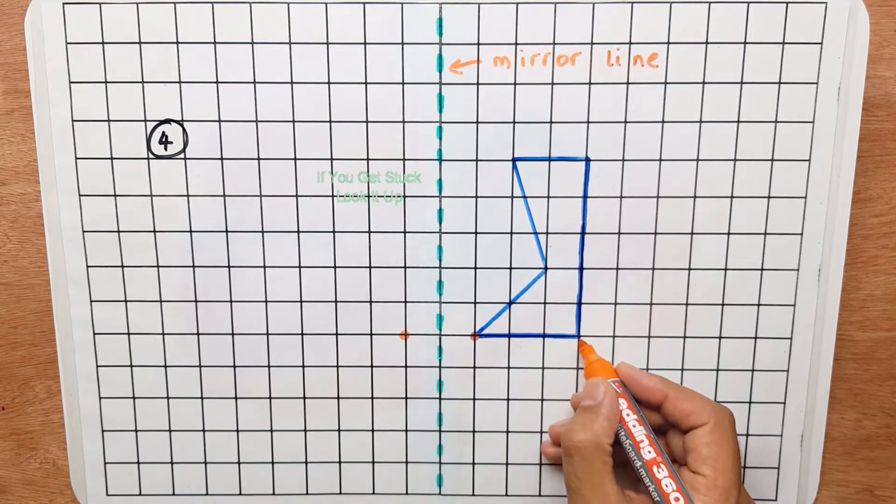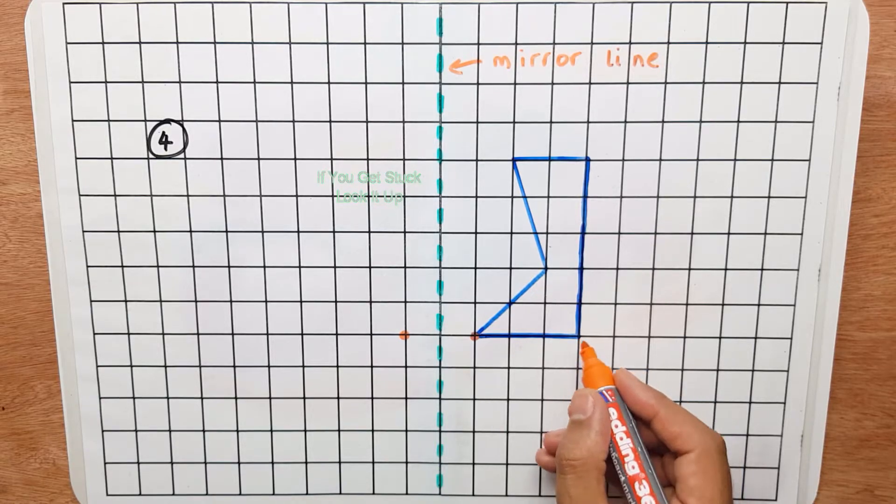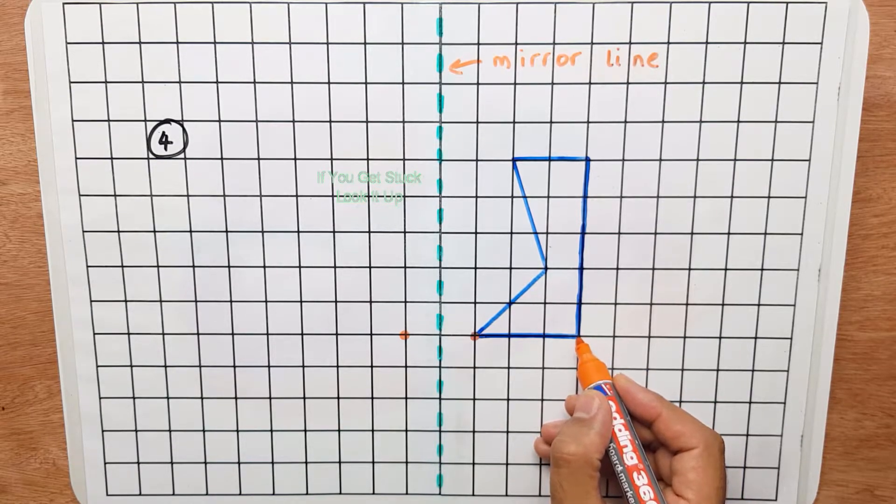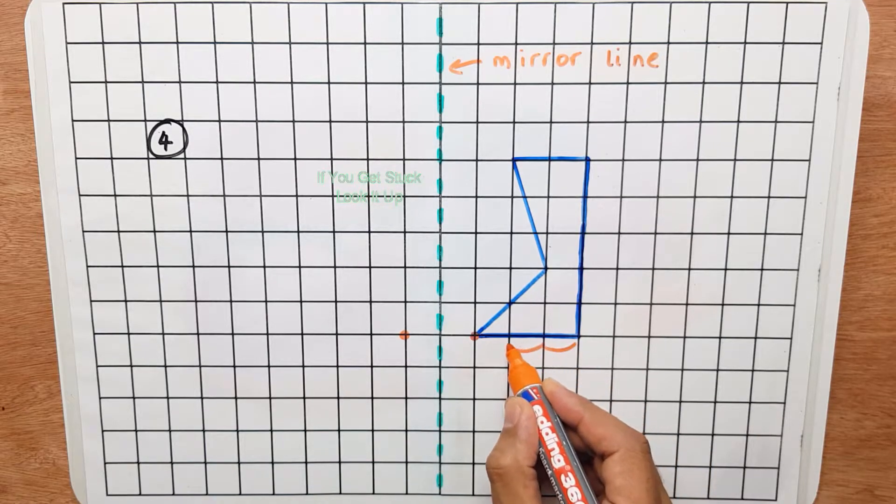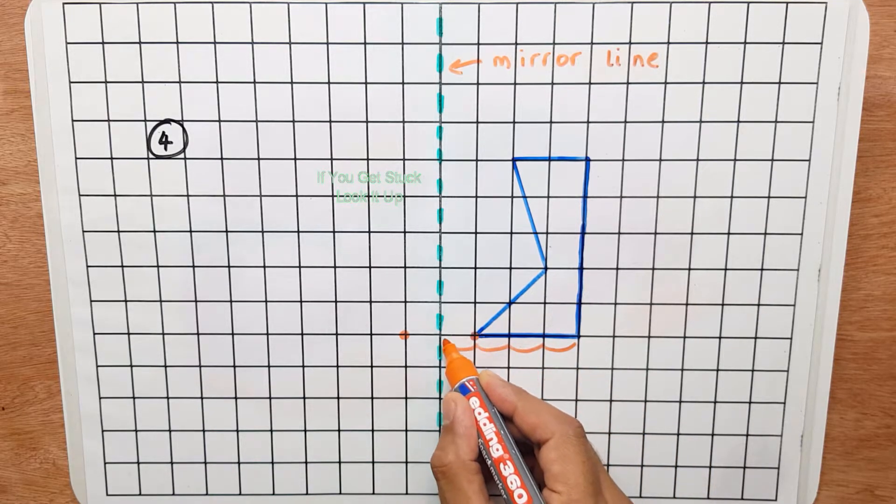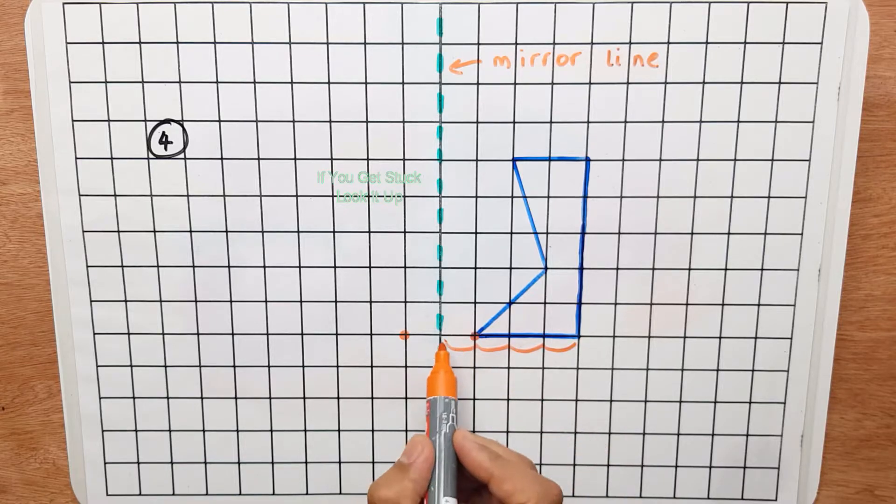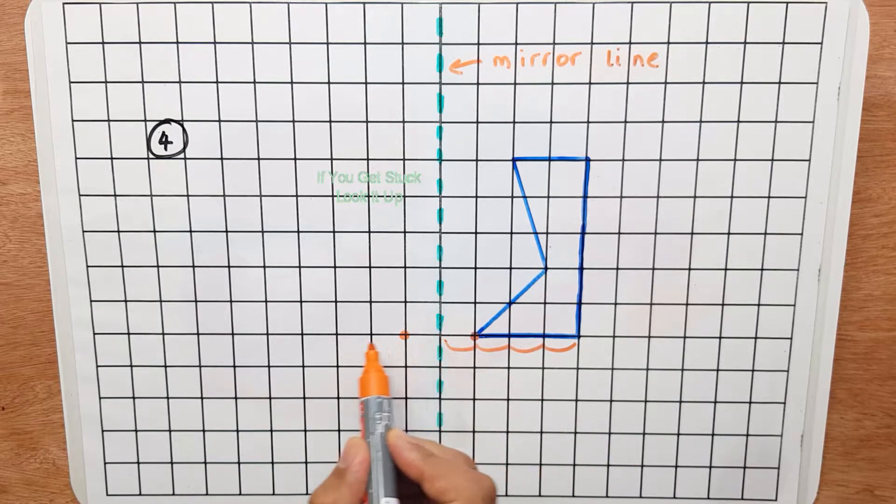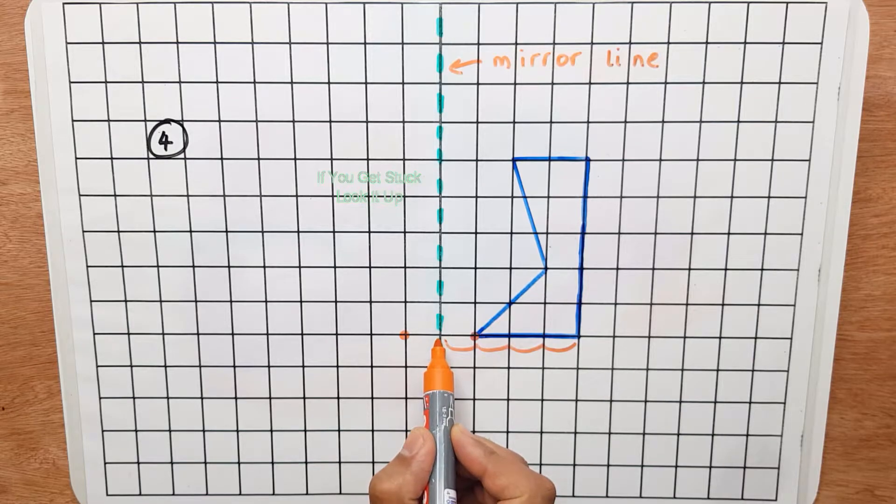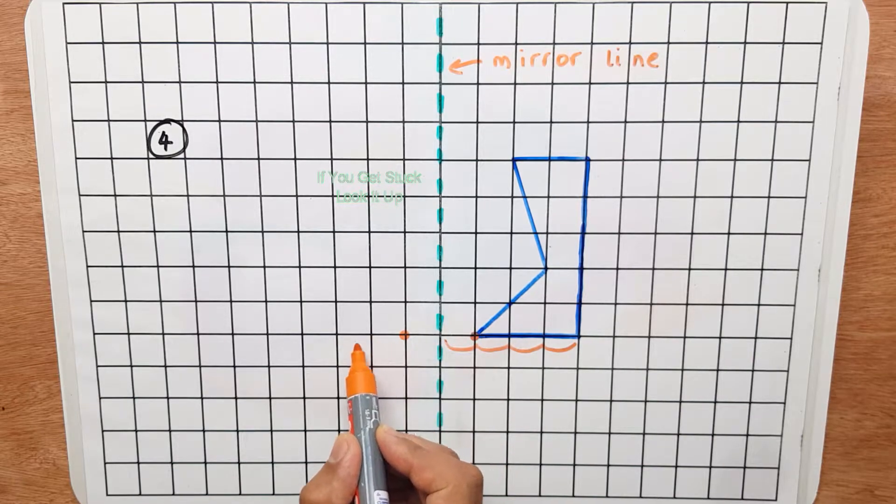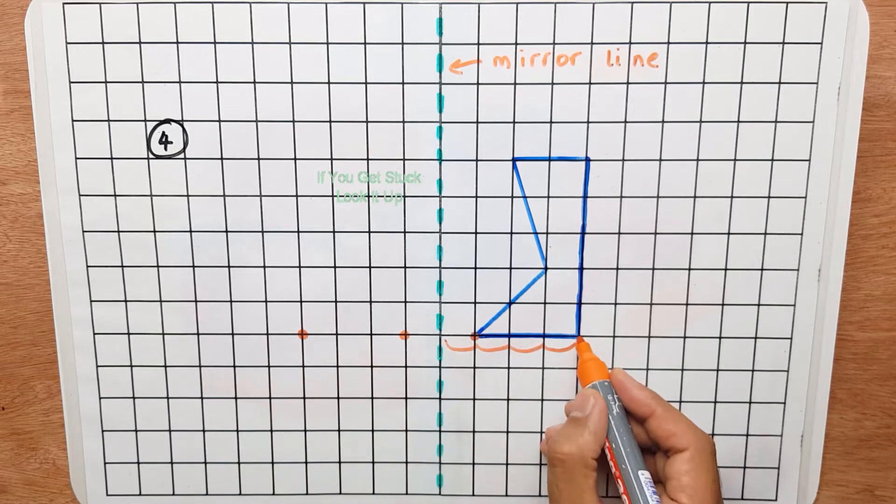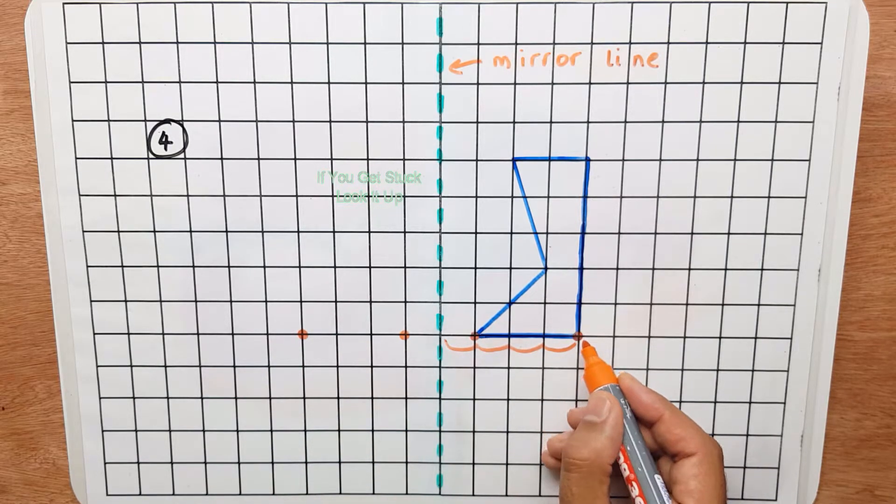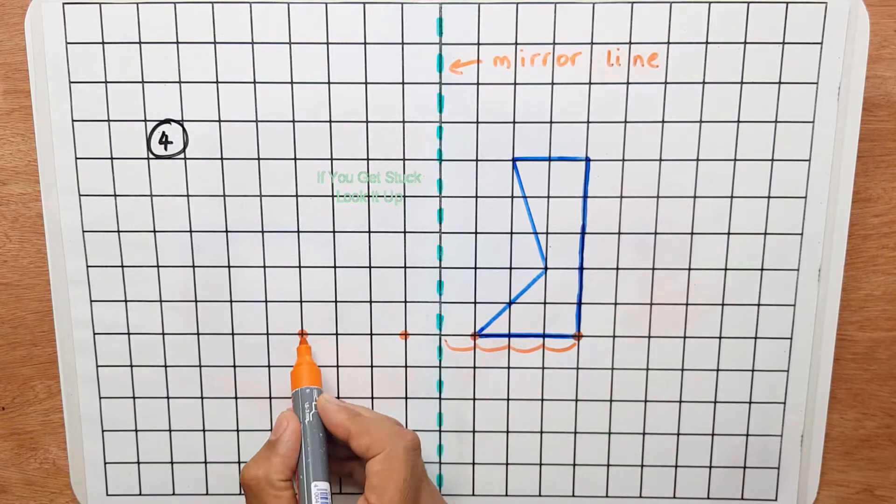Now let's look at this vertex or corner. So how many squares do I need to jump from there to the mirror line? So let's have a look. One, two, three, four. So what I do now, I jump four squares away from the mirror line. So one, two, three, four. So this point here or this corner has reflected onto this side here.